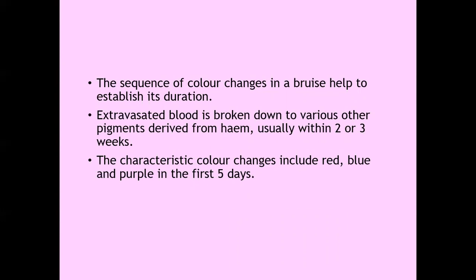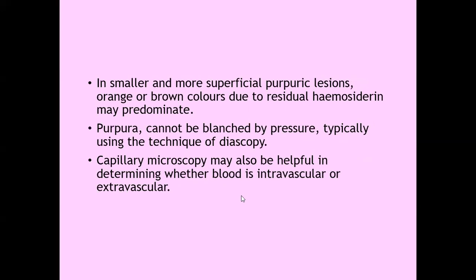The sequence of color change in a bruise helps to establish its duration. Extravasated blood is broken down to various pigments derived from heme usually within two to three weeks. If the lesion is classically red, it has an onset of a few days. Then gradually in a week it turns blue, then becomes purple in about ten days. In smaller and more superficial purpuric lesions, an orange or brown color is due to residual hemosiderin, mainly seen in pigmented purpuric dermatosis.